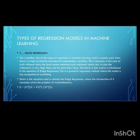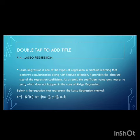usually used when there is high correlation between the independent variables. This is because in the case of multi-collinear data. The fourth one is lasso regression. Lasso regression is one of the types of regression in machine learning that performs regularization